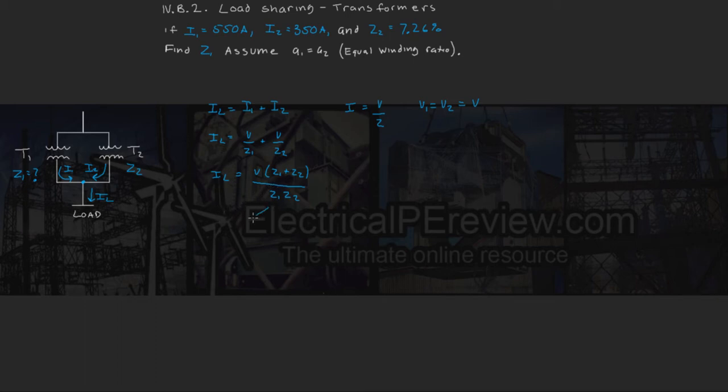We can rewrite this to be two slightly different equations. The first is IL equals I1 times Z1 plus Z2 over Z2.